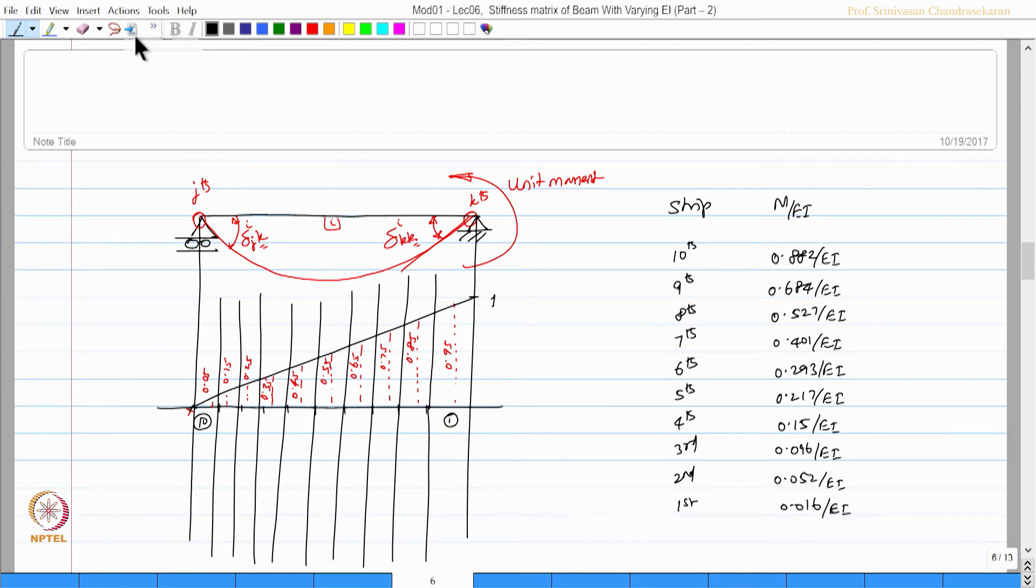This is my first strip. This is my 10th strip; the 10th strip has got the maximum EI. Let us convert this into the M by EI diagram by plotting this.